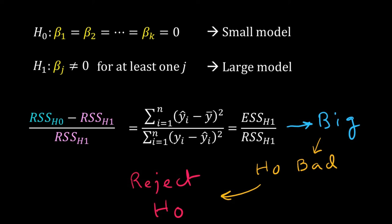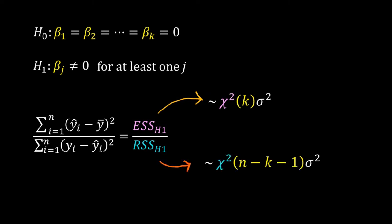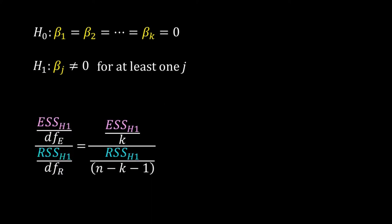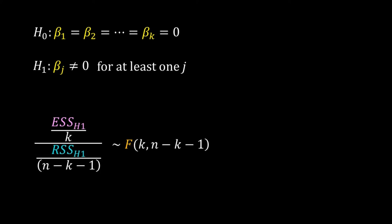Now, how big is big enough? For that we need to take help of a probability distribution. We can show that ESS follows a chi-square distribution with degrees of freedom k, and RSS follows a chi-square distribution with degrees of freedom n − k − 1, where n is the number of data points and k is the number of predictors x₁ to xₖ, and σ² is the true variance of the error at the population level. Rather than taking the ratio of ESS and RSS directly, I scale them by their respective degrees of freedom and then take the ratio. We get a ratio of two scaled chi-squares, and we know that a ratio of two scaled chi-squares follows an F distribution.